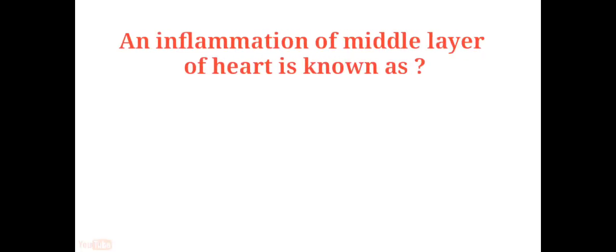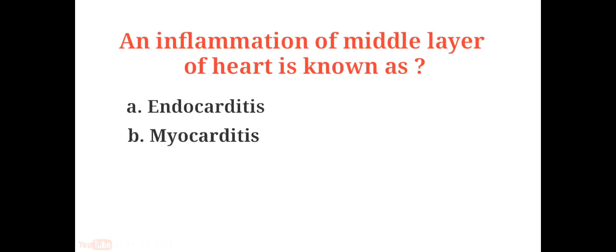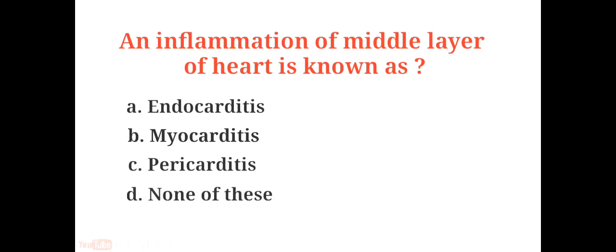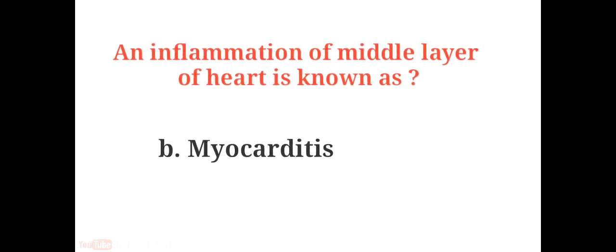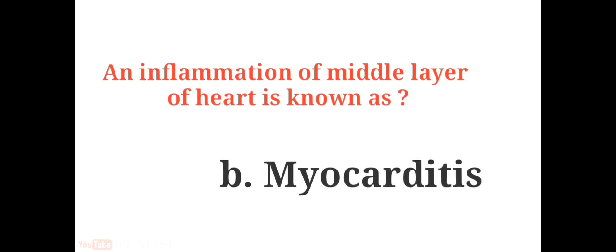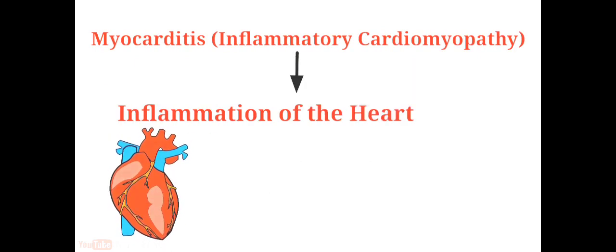An inflammation of the middle layer of the heart is known as: A. Endocarditis, B. Myocarditis, C. Pericarditis, D. None of these. The answer is B. Myocarditis. Myocarditis, also known as inflammatory cardiomyopathy, is inflammation of the heart muscle.